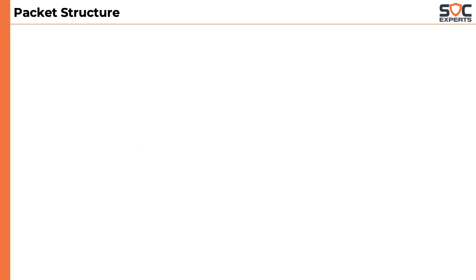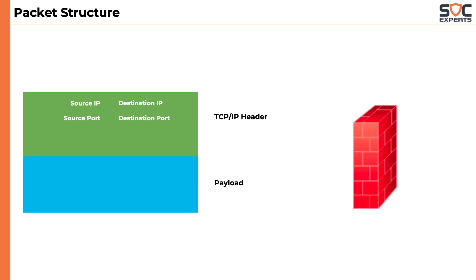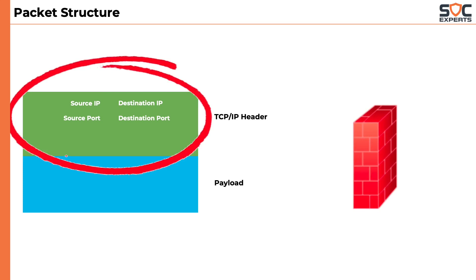Let's start with some of the basics we learnt in networking concepts. We know that a packet has two main parts: TCP/IP header and the payload. A firewall helps in stopping unnecessary traffic by scanning the TCP/IP header.